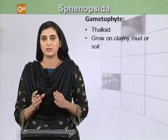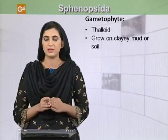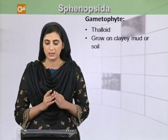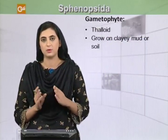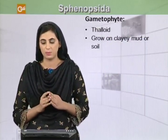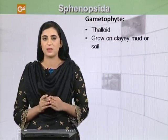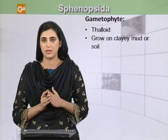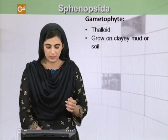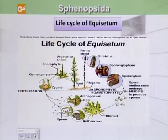Talking about their gametophyte, it is thaloid and it grows on clayey mud or soil, for example in the case of Equisetum. Now we will see the life cycle of Equisetum.